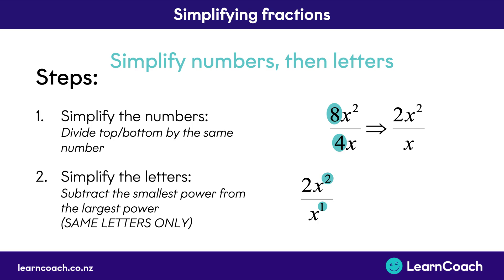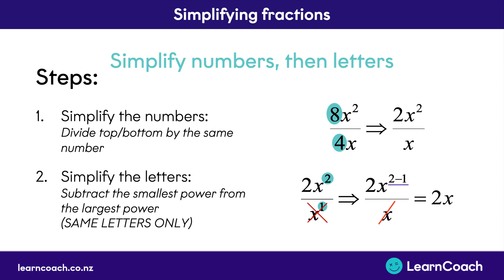In this case, we have the bigger number 2 up on the top as the big power. So we subtract 1 from that and cross off one of those powers. Finally, we can write out 2x to the power of 2 minus 1 as simply 2x, because the power of 2 minus 1 just becomes to the power of 1, and we never need to write to the power of 1. So this is our answer.